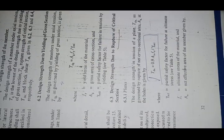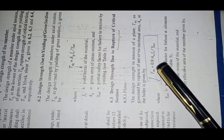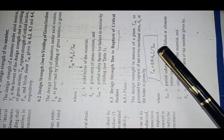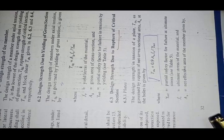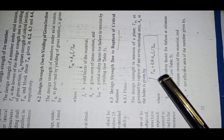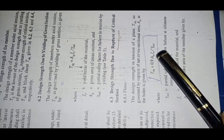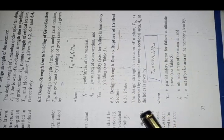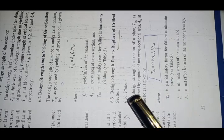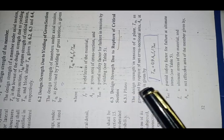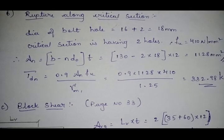Now go back to the code book page number 32, Clause 6.3: design strength due to rupture of a critical section. The equation is Tdn = 0.9·An·fu / γm1. This equation is for the plate, and since we are designing for a plate, we use this equation.